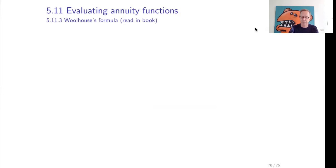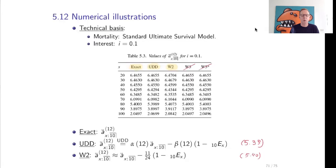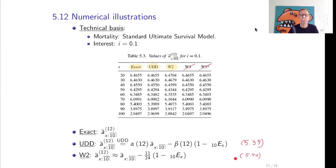Here is a numerical illustration. We take as mortality the standard ultimate survival model with interest rate 0.1 (10%). We look at the exact value of a monthly annuity for 10 years with payments of 1/12 per month, and compare with the value under the UDD assumption and the W2 approximation. The UDD approximation corresponds to formula 5.39 and the W2 approximation to formula 5.40. These approximations are very close to each other and perform very well.